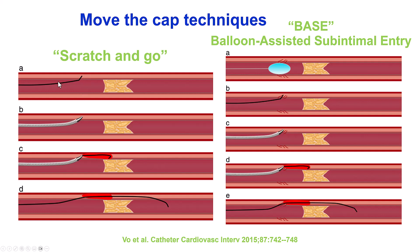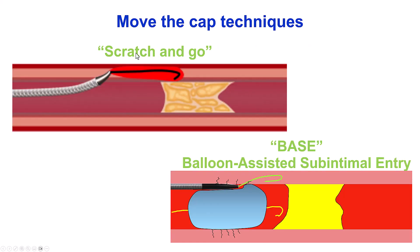In the scratch-and-go, we have a stiff guide wire and a microcatheter that goes into the extra-plaque space. That wire is removed, and then we advance the polymer-jacketed wire. In contrast, in the BASE technique, we have a slightly oversized balloon that is inflated, creating dissections proximal to the proximal cap that are then used to advance a guide wire into the extra-plaque space.